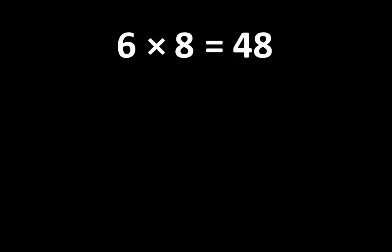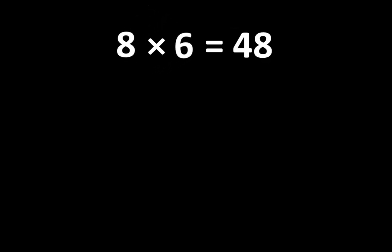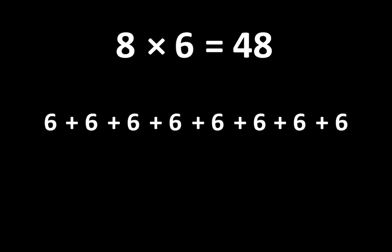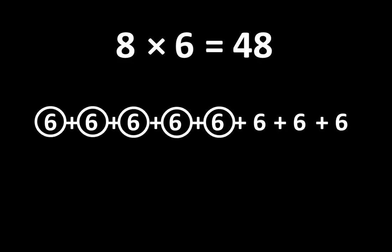And if 6 times 8 is equal to 48, we also know that 8 times 6 is equal to 48. So we can think of 48 as 8 groups of 6. Counting the groups of 6, we can see that there are 8 groups of 6, which is equal to 48.